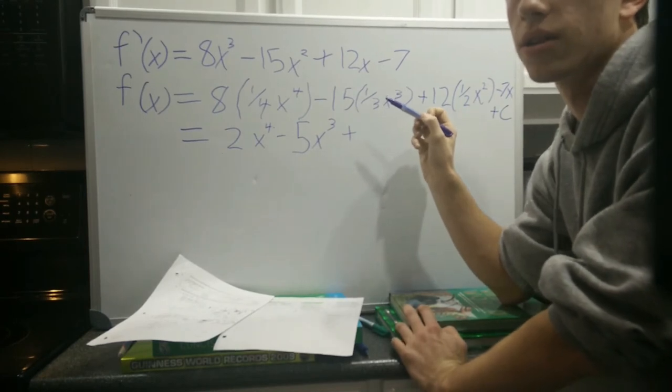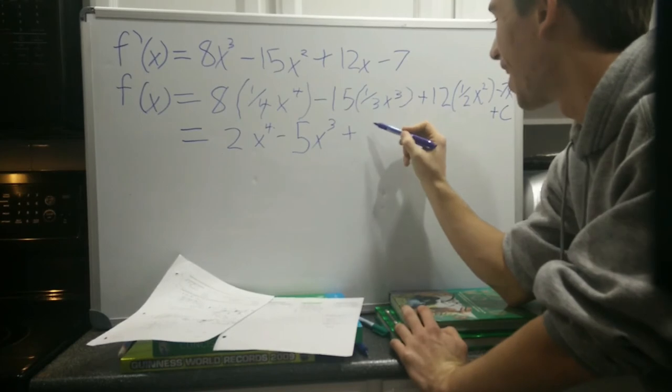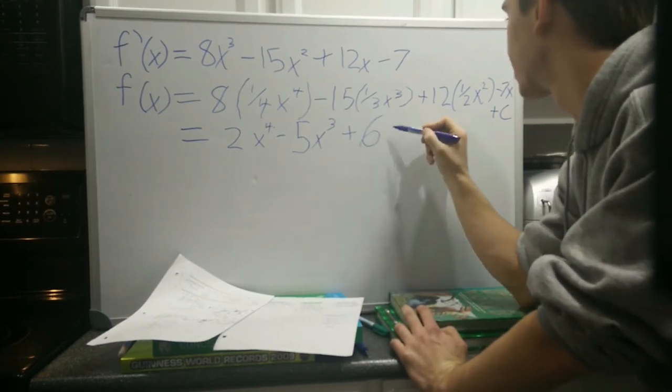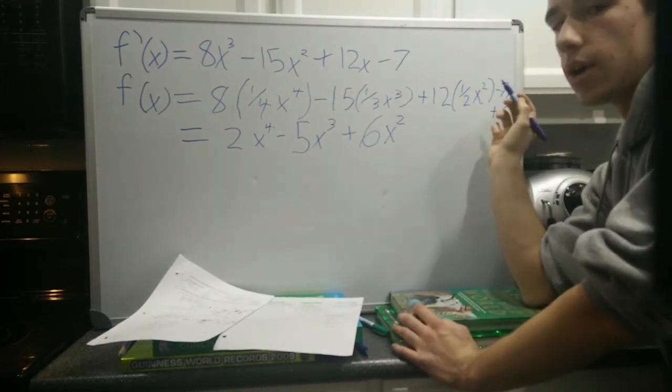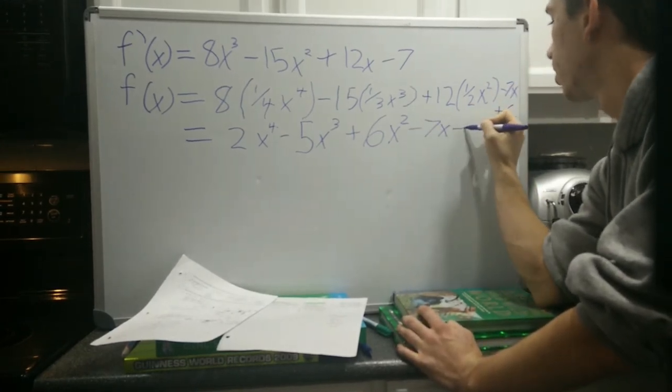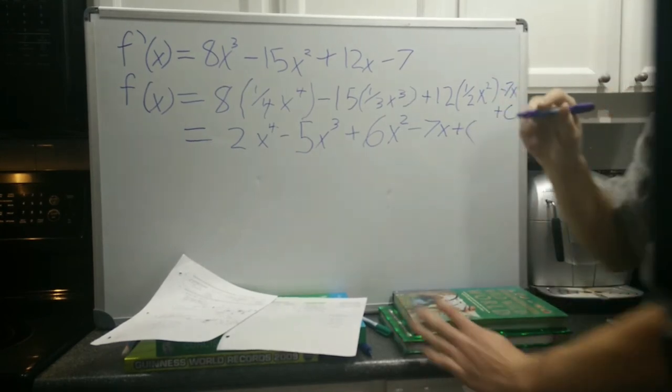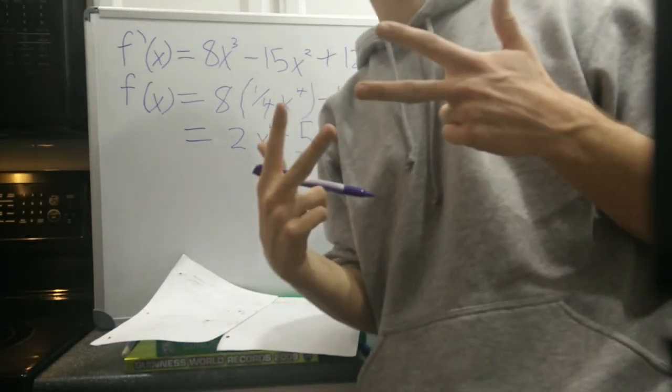So we're going to have 5x to the power of 3, plus half of 12, anybody? Half of 12? There's no playoffs. So half of 12 is going to be 6x squared, and we still have the minus 7 from before, so minus 7x plus c. And that's our anti-derivative. See you later.